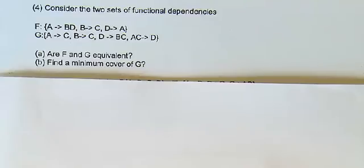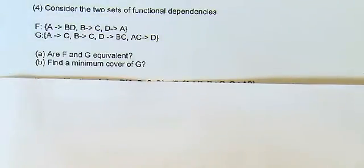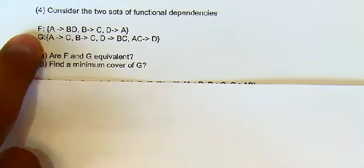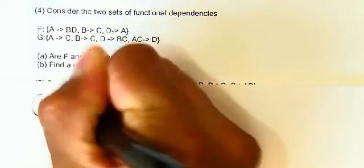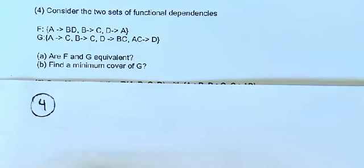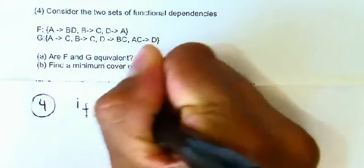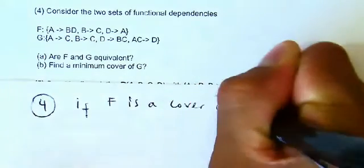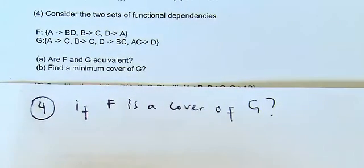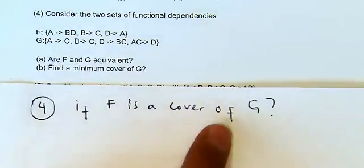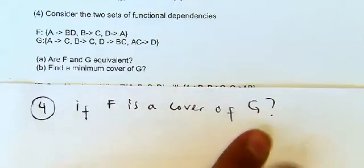In this tutorial we will continue solving the normalization exercises that we started in the previous tutorial. For question number four we need to first answer if these two sets of functional dependencies are equivalent. To answer that question we need to check first if F is a cover of G, and if yes, then check if G is a cover of F. If both answers are yes, then F and G are equivalent. To check if F is a cover of G we need to see if F can logically imply all functional dependencies of G.